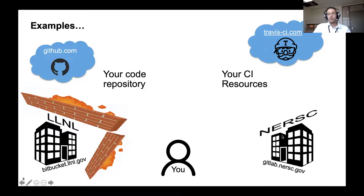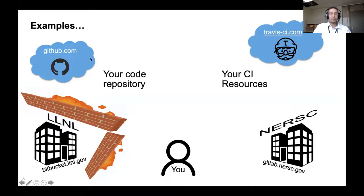It might be you're running with Travis CI, or you could be running with GitLab. GitLab can be set up locally — NERSC has a GitLab setup, and many other sites have one as well. Your CI resources need to know about your repository, and your repository needs to hook into your CI resources. When you commit code with CI set up, you send a code commit to your repository; your repository notifies the external CI provider that a new version is available; the CI provider fetches the new version, runs it, and sends the results back to GitHub. That way everything looks locally present in GitHub — you get checkmarks or green lights or red lights sitting inside of your GitHub repo view.